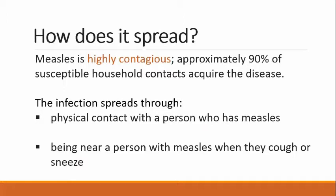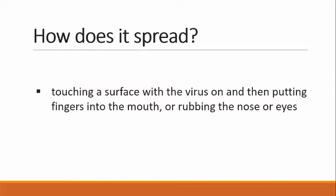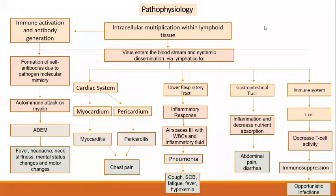How does it spread? Measles is highly contagious. Approximately 90% of susceptible household contacts acquire the disease. The infection spreads through physical contact with a person who has measles, being near a person with measles when they cough or sneeze, and touching a surface with the virus on it, then putting fingers into the mouth or rubbing the nose or eyes.